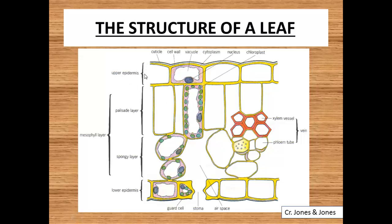In diagrammatic form we have got the various layers: the upper epidermis layer, the mesophyll layer — mesophyll just means the middle of the leaf — and we have got two parts of the mesophyll layer, the palisade and the spongy mesophyll layers, and then the lower epidermis cells underneath. We also have the vascular bundle or veins, labelled with xylem vessel and phloem tube.